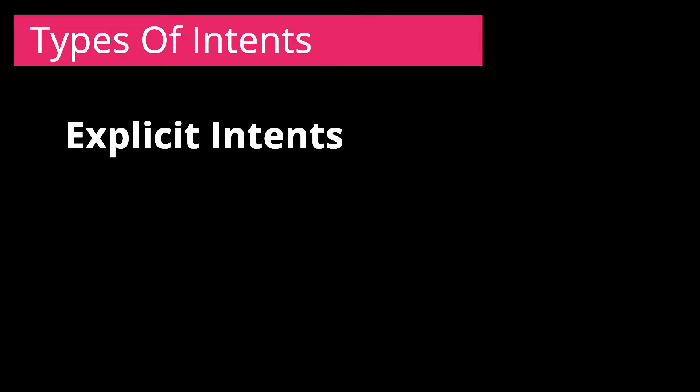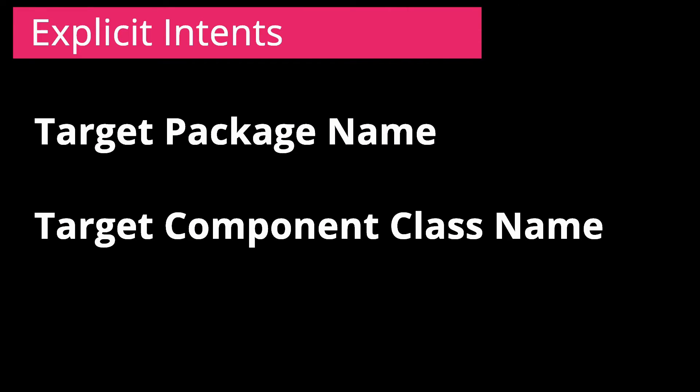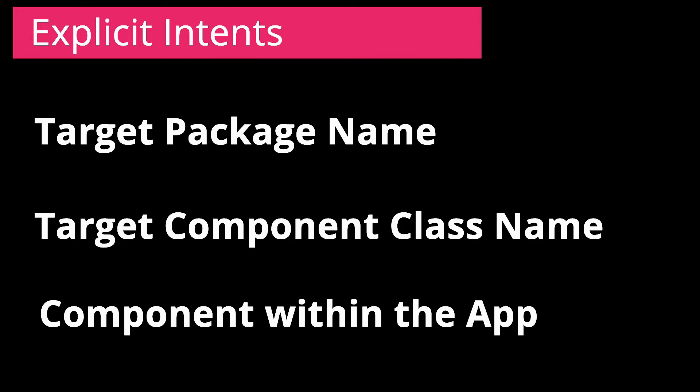There are two types of intents: explicit intents and implicit intents. Explicit intents specify which application will satisfy the intent by supplying either the target app's package name or a fully qualified component class name. You will typically use an explicit intent to start a component in your own app because you know the class name of the activity or service you want to start.